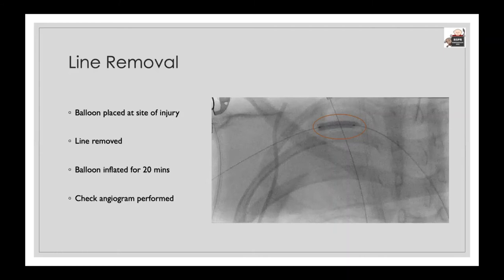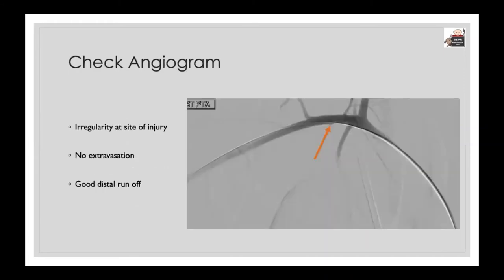A balloon was placed at the level of the injury and the line was removed. The balloon was then inflated for 20 minutes to allow haemostasis to occur, and following this the balloon was deflated and a check angiogram was performed. The check angiogram shows an irregularity at the site of the arterial injury; however, importantly there was no contrast extravasation seen, and the artery remained patent with flow of contrast beyond the site of injury.